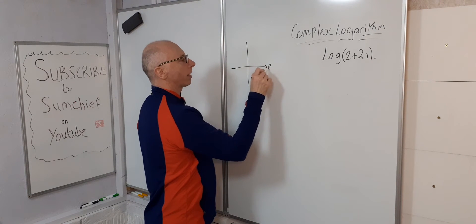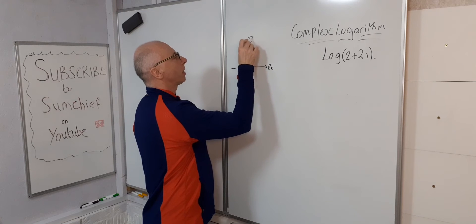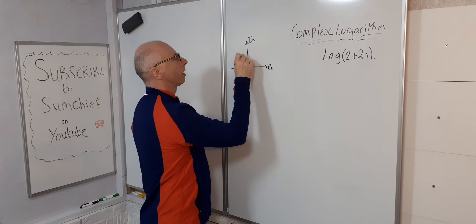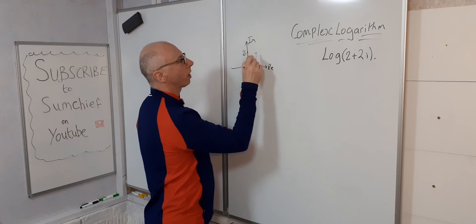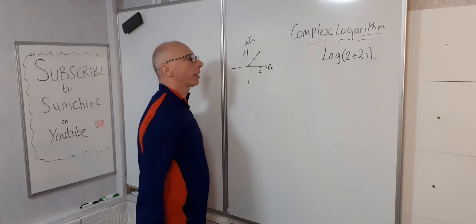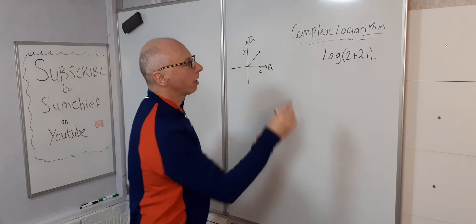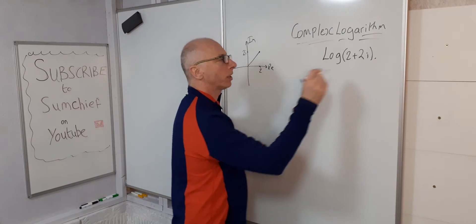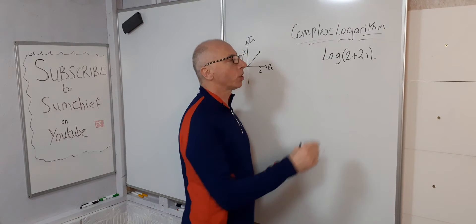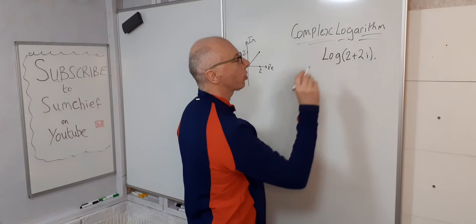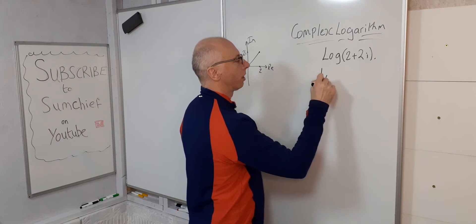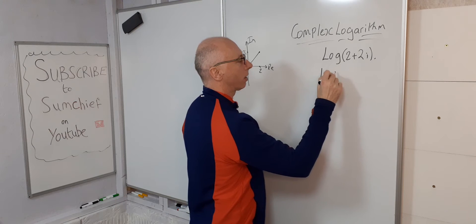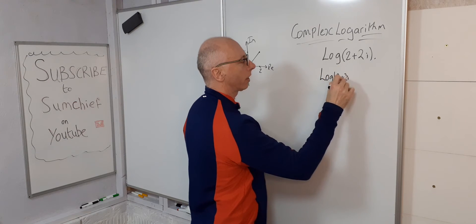Real axis, imaginary axis. We plot the point 2 plus 2i. The real part will be the modulus of 2 plus 2i, so we'll call it log of |2 plus 2i|.